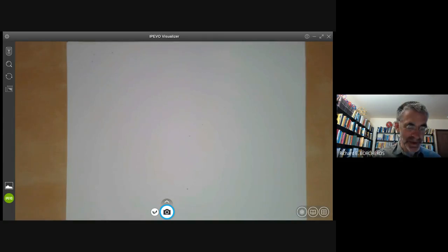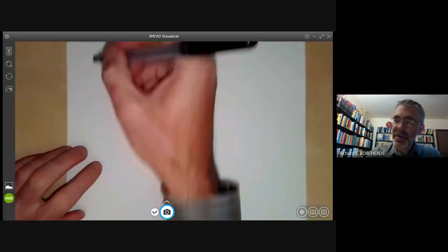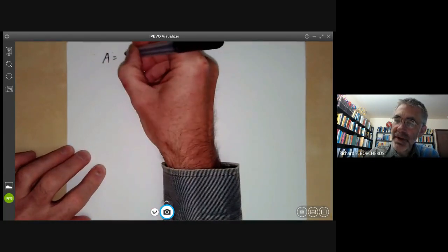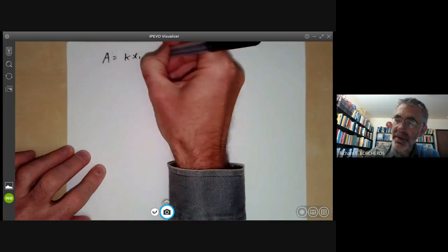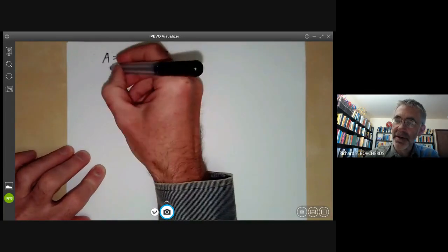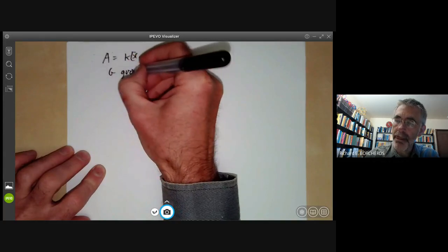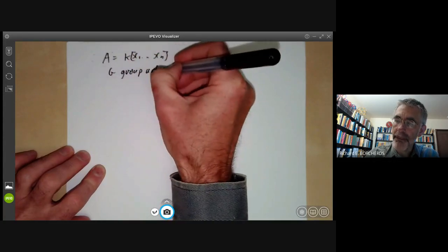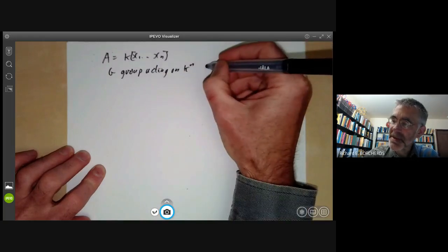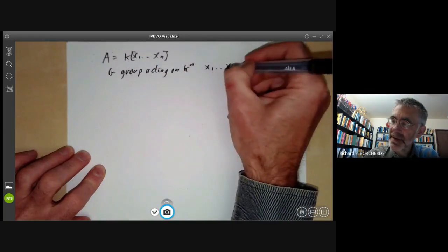This is Algebraic Geometry Lecture 12 where we will cover the proof of the Hilbert Finiteness Theorem. So let's just recall what this says. Suppose that A is the ring k[x1,...,xn], polynomials in n variables over a field. G is a group acting on k^n which we think of as being spanned by x1 up to xn.